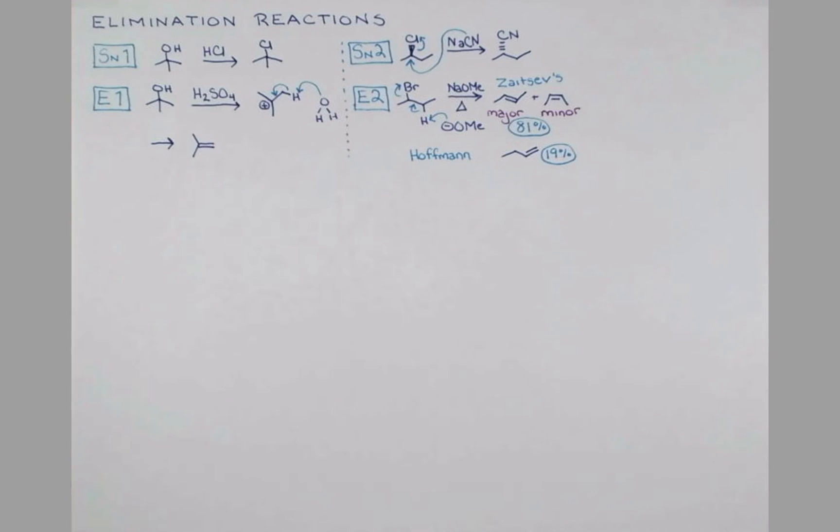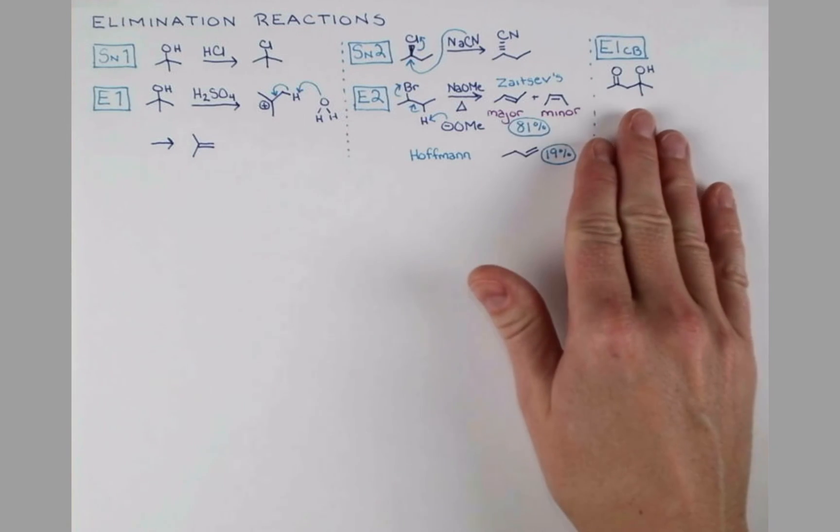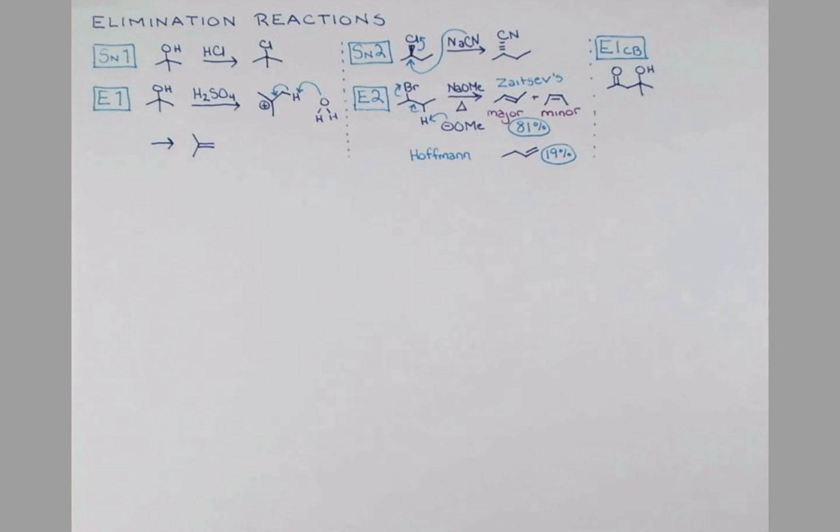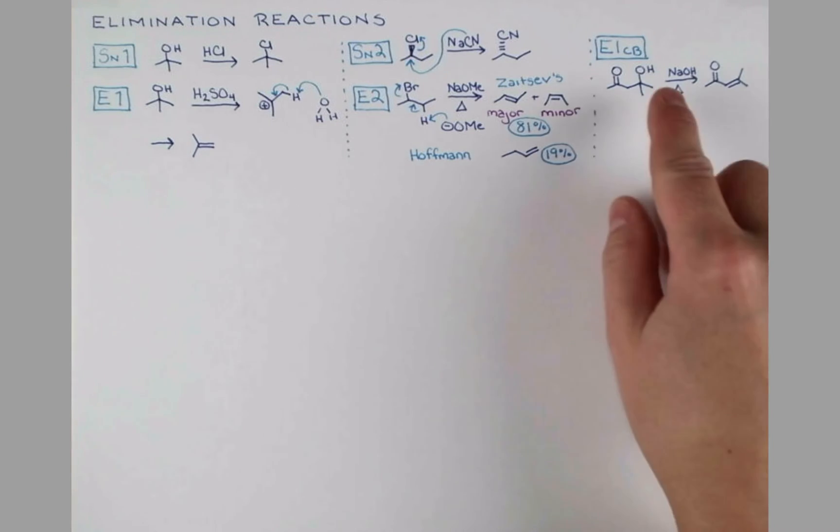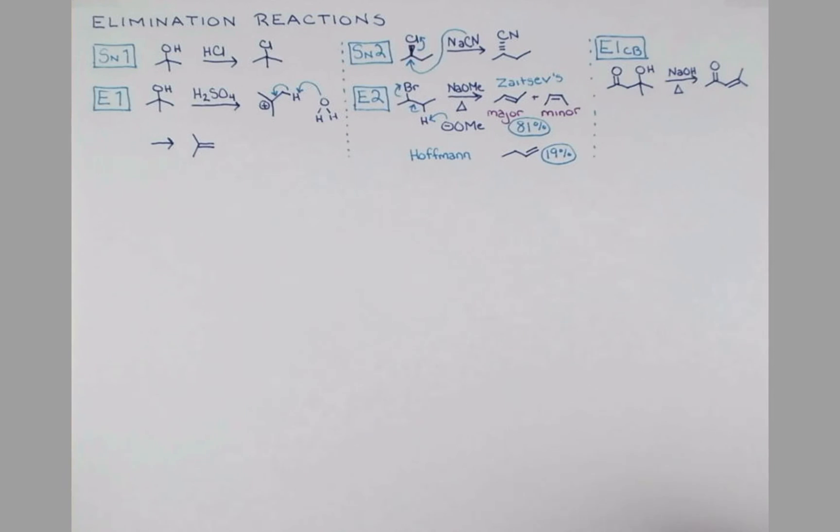Under specific reaction conditions with specific leaving groups, we can favor the Hoffman product in these reactions. We won't have time to go over that in this video, but you can look that up if you need to know it. I want to introduce one more related elimination mechanism. This is called E1CB.